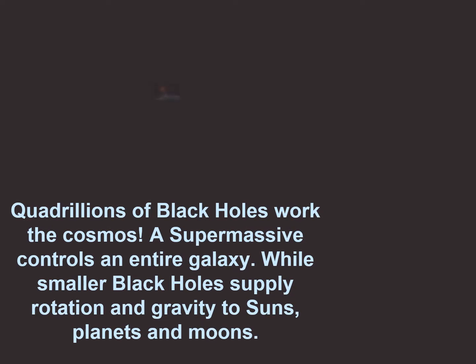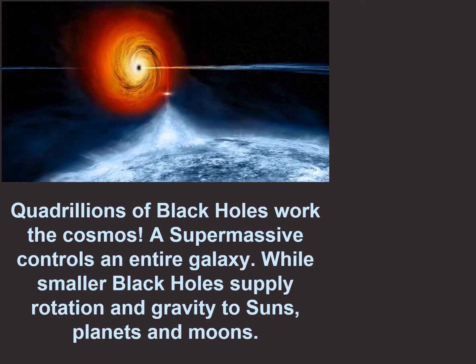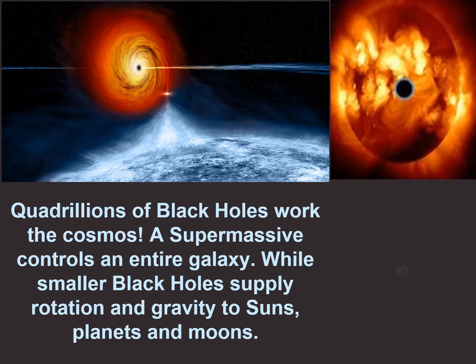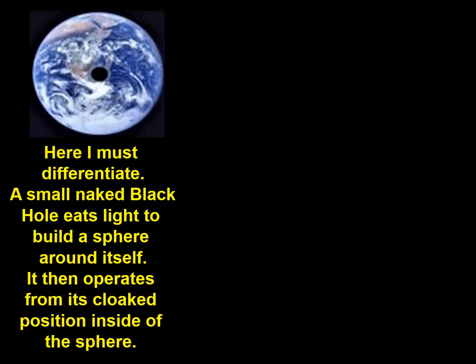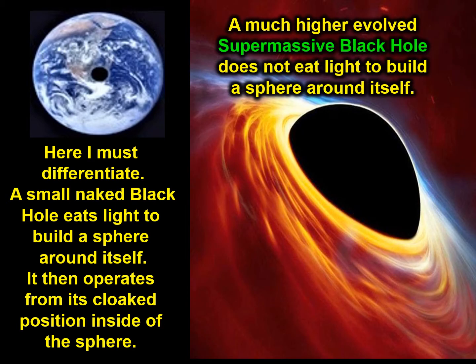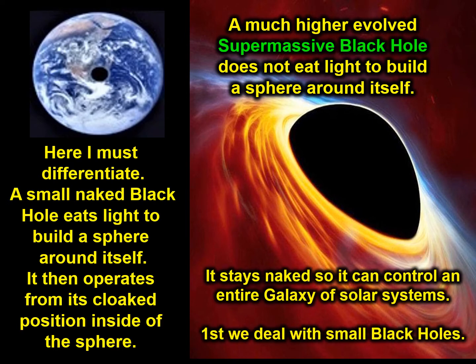Quadrillions of black holes work the cosmos: a supermassive controls an entire galaxy, while smaller black holes supply rotation and gravity to suns, planets, and moons. A small naked black hole eats light to build a sphere around itself, then operates from its cloaked position inside of the sphere. A much higher evolved supermassive black hole does not eat light to build a sphere — it stays naked so it can control an entire galaxy of solar systems.